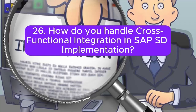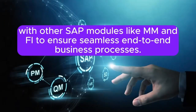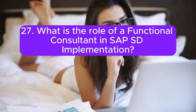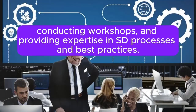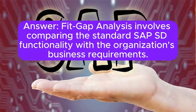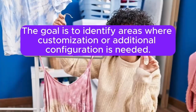Question 26: How do you handle cross-functional integration in SAP SD implementation? Answer: Cross-functional integration involves coordinating activities with other SAP modules like MM and FI to ensure seamless end-to-end business processes. Integration testing is performed to validate these connections. Question 27: What is the role of a functional consultant in SAP SD implementation? Answer: A functional consultant in SAP SD is responsible for understanding business requirements, configuring the system, conducting workshops, and providing expertise in SD processes and best practices.